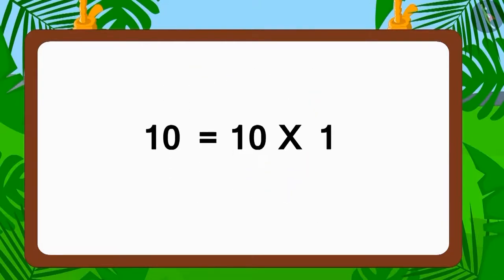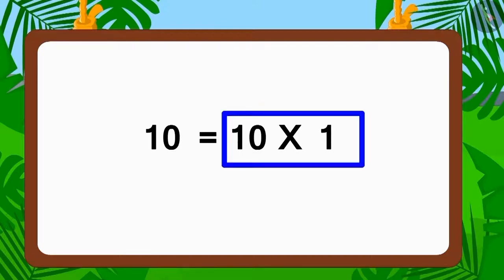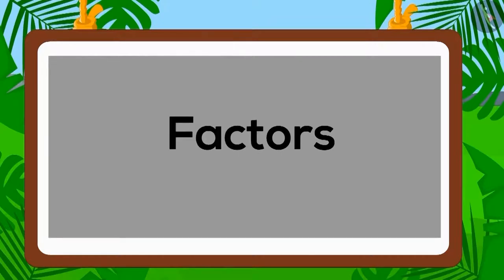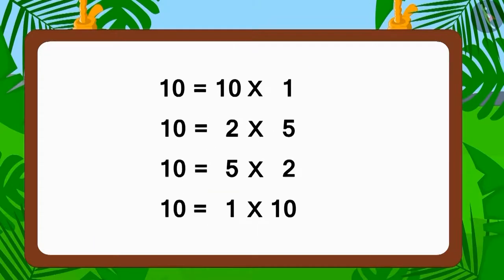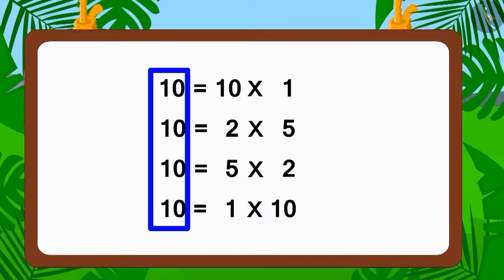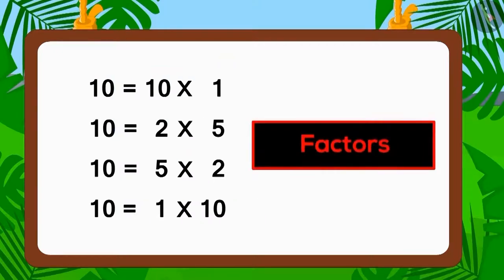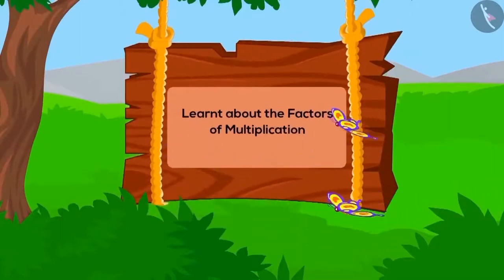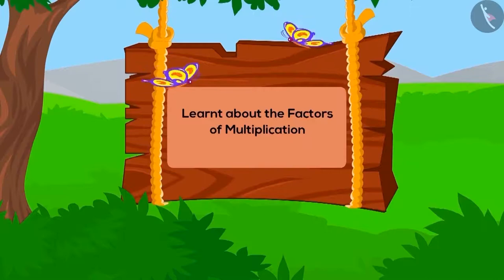So, we can write any number as a multiplication of two numbers. The two numbers that form part of the multiplication are known as factors. Here, one, two, five, and ten are factors of ten. Children, in this lesson we learned about factors of multiplication. In the next two lessons, we will see some interesting examples.